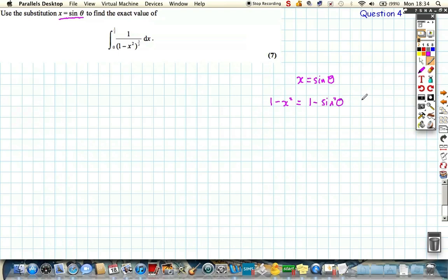this is really 1 minus sin squared, if we're using our substitution. And we know from our identity cos squared plus sin squared equals 1, that this here is equal to cos squared theta.